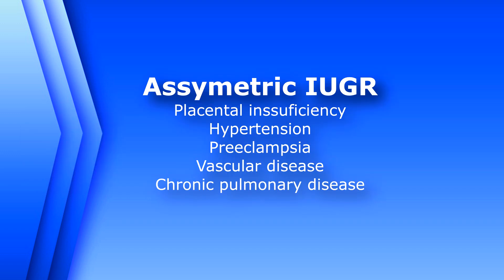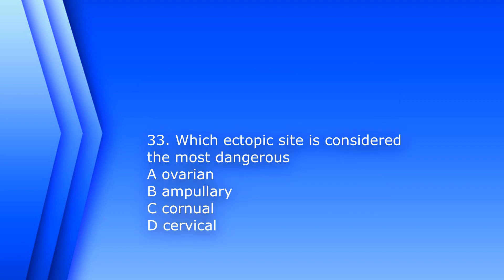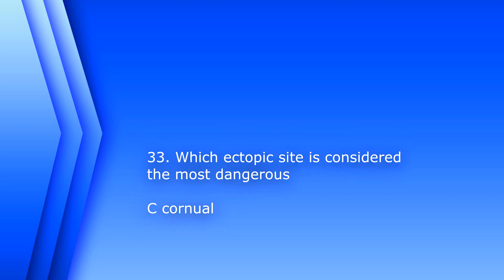Question 33: Which ectopic site is considered the most dangerous for the mother? A) ovarian, B) ampullary, C) cornual, or D) cervical. The answer is C, cornual. This position can allow the ectopic pregnancy to grow rather large, and if it ruptures it can cause massive bleeding.